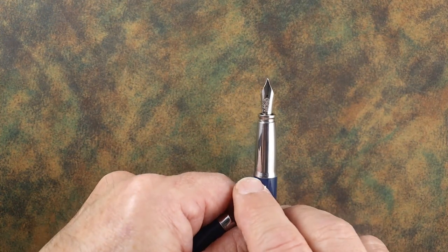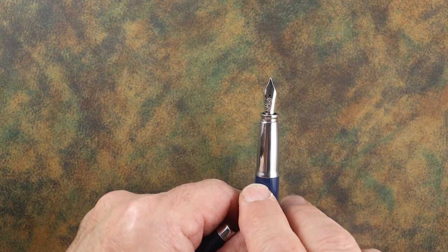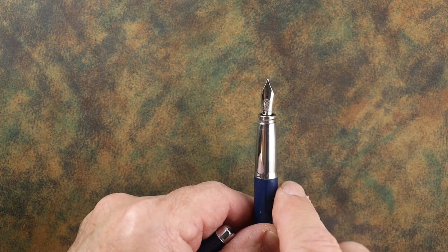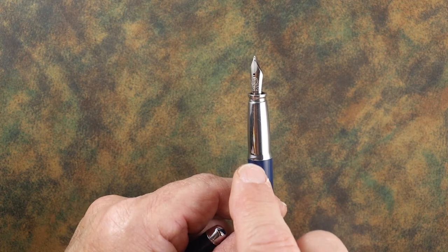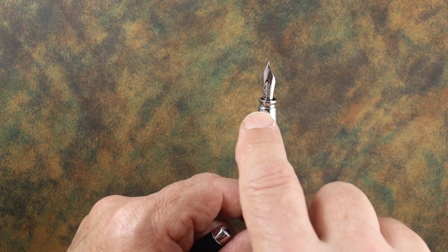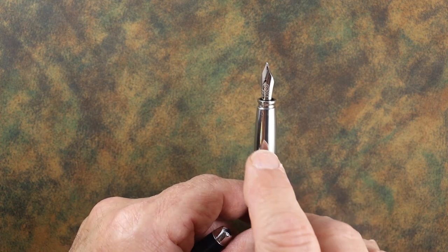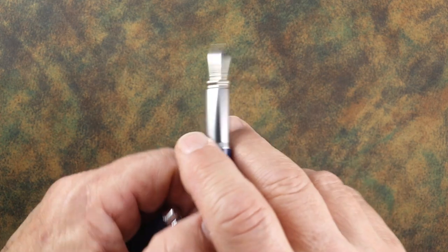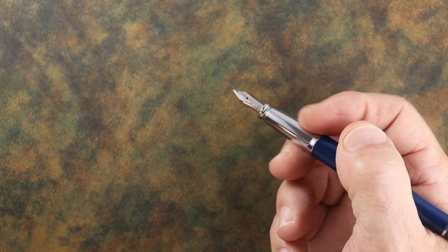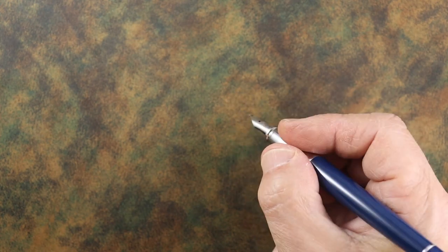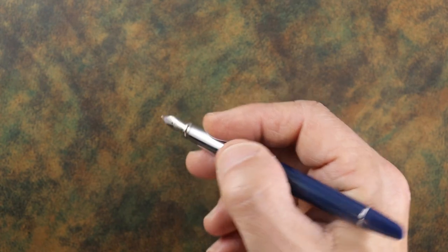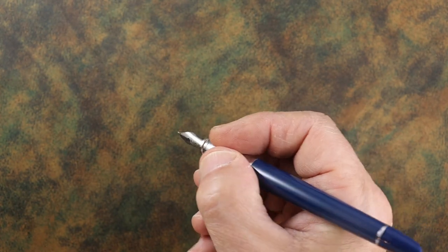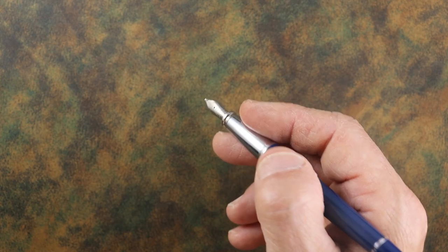The grip goes from the widest point, where it flares slightly as it meets the body, at 11.5 millimeters, and it tapers down to just above this section at about 8.5 millimeters. Right in the middle is 10 millimeters, which for me is good. It's chrome so it is somewhat slippery, but you do have this acrylic body that gives you a little bit of traction. If that's a deal breaker, it can be slippery, so you might want to consider that.